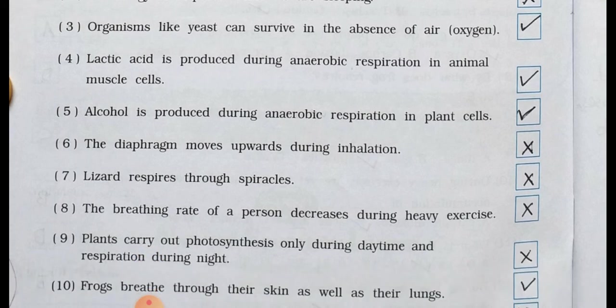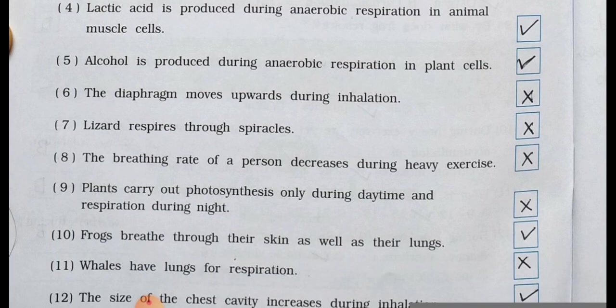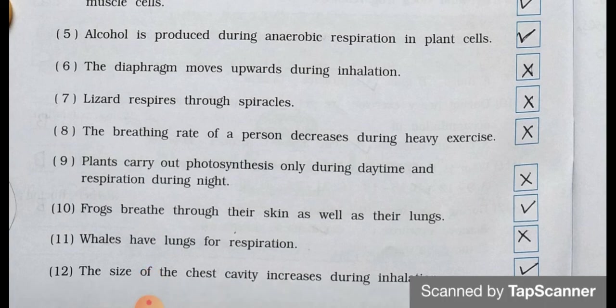Number 4: Lactic acid is produced during anaerobic respiration in animal muscle cells? True. Number 5: Alcohol is produced during anaerobic respiration in plant cells? True. Number 6: The diaphragm moves upwards during inhalation? False.